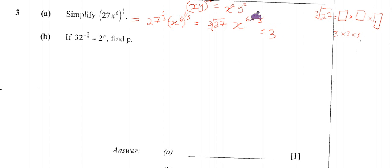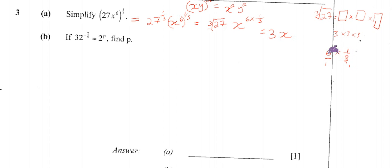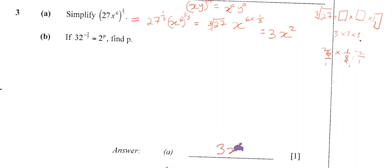For x to the power 6 times 1/3: that is 6 over 1 multiplied by 1/3. By cross multiplication, 3 into 3 is 1 and 3 into 6 is 2, so that becomes 2 over 1, which is 2. So our final answer for part a is 3x squared.